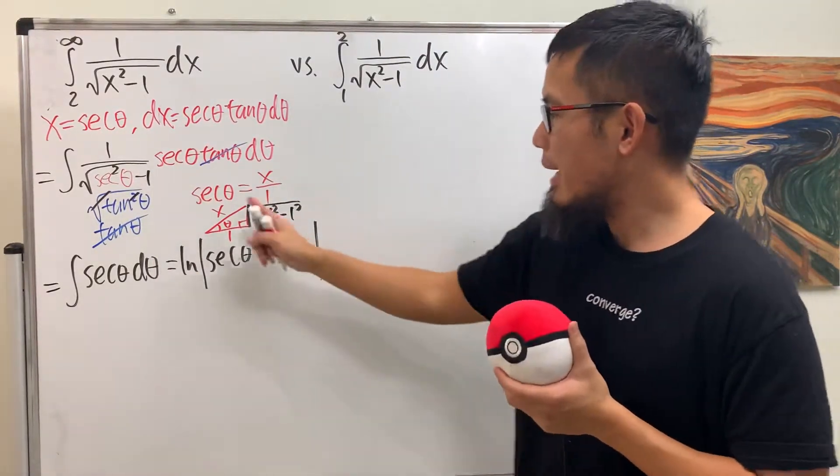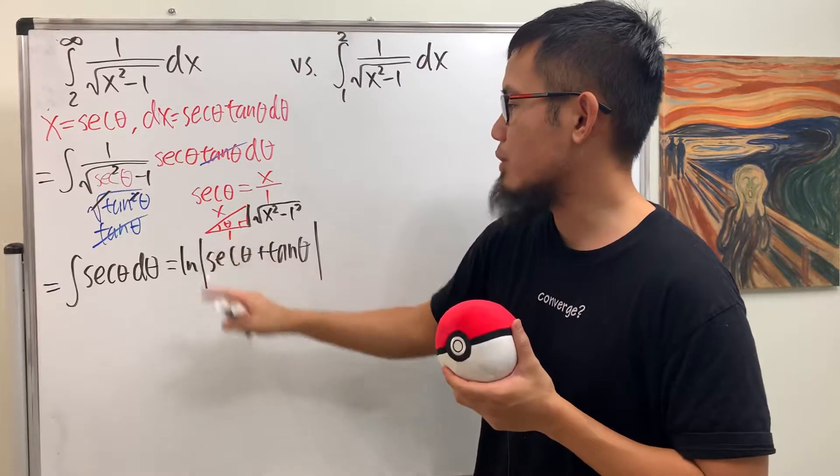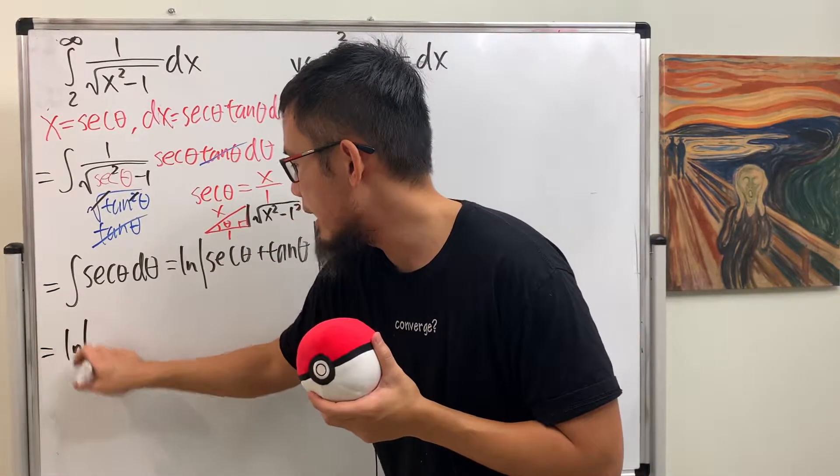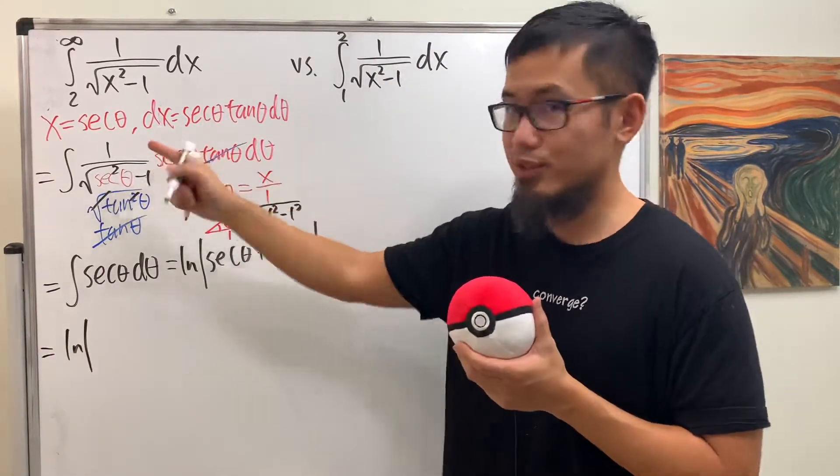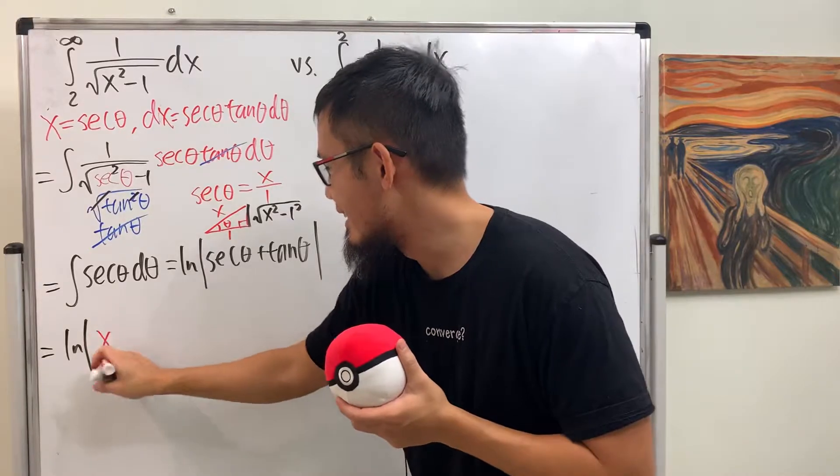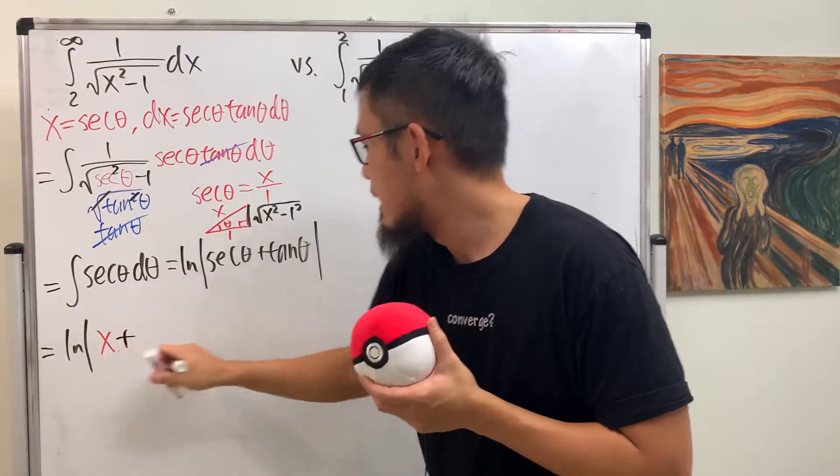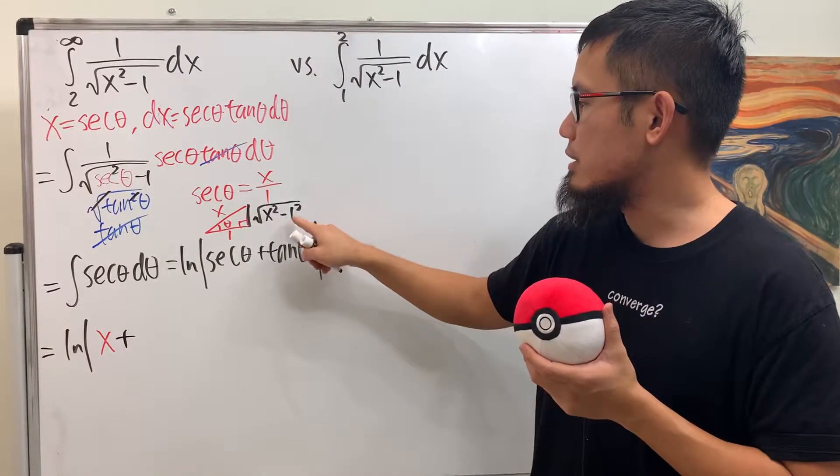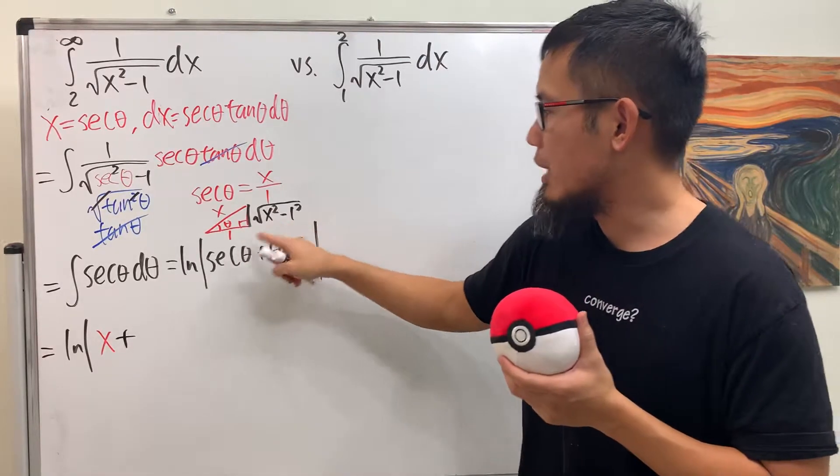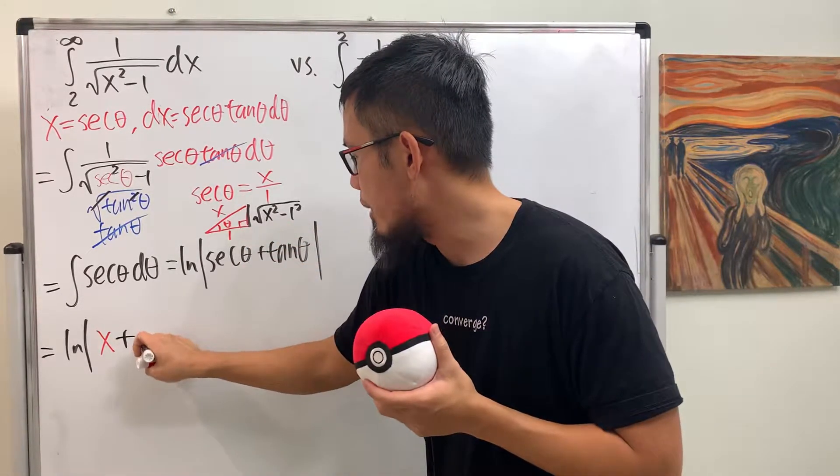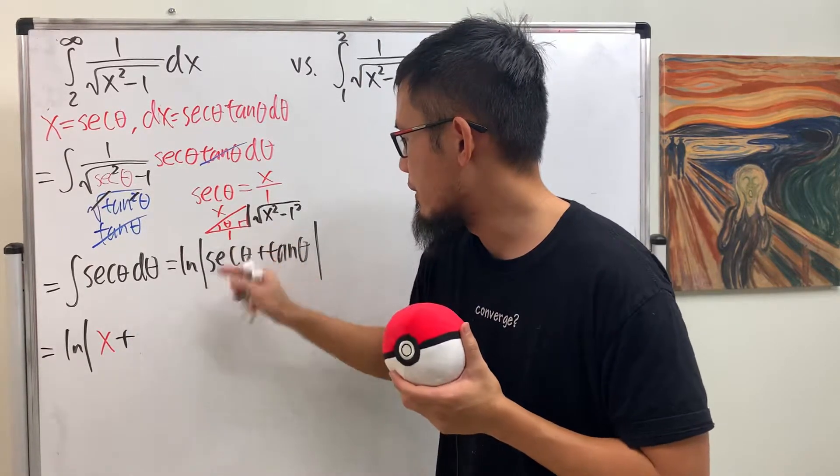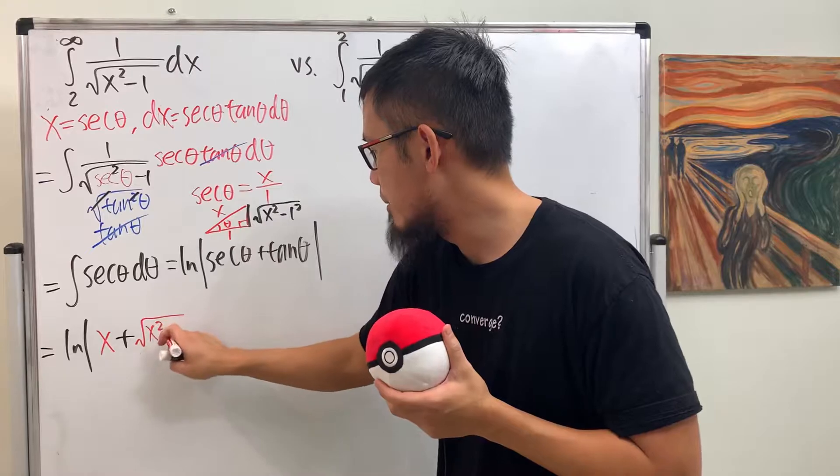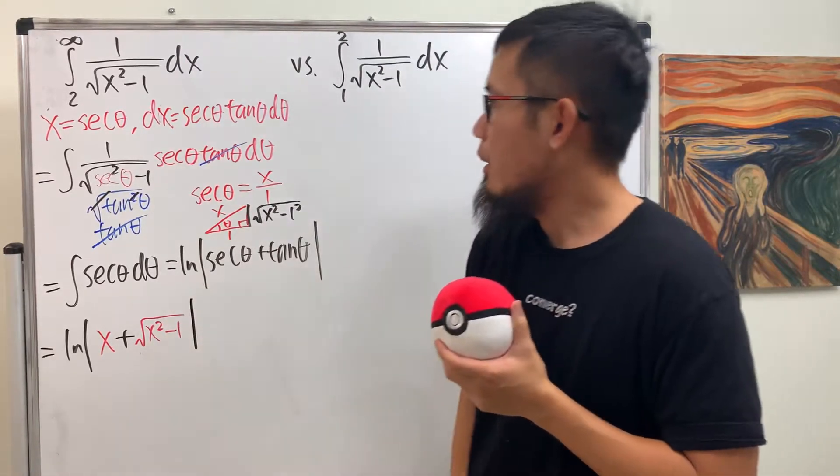All right, so based on this triangle, let's go ahead and figure this out. This is ln absolute value. Secant theta is just going to be x. That's the nice one. And then plus tangent theta, well, tangent is opposite over adjacent, so we have just square root of x squared minus 1 over 1, so we have square root of x squared minus 1.